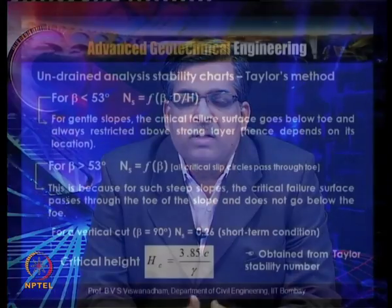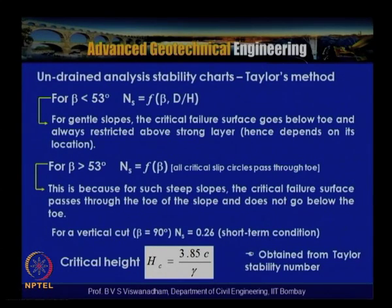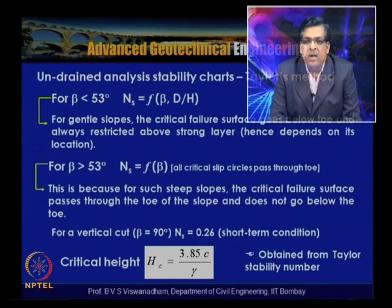For beta less than 53 degrees, the stability number depends on the depth factor d/h, also indicated as n. For gentle slopes the critical surface goes below the toe and is restricted above a strong layer. For beta greater than 53 degrees, the stability number depends only on slope inclination, and the critical slip circles pass through the toe. For a vertical cut at beta equals 90 degrees, n_s equals 0.26, giving a critical height h_c of 3.85 c_u divided by gamma.